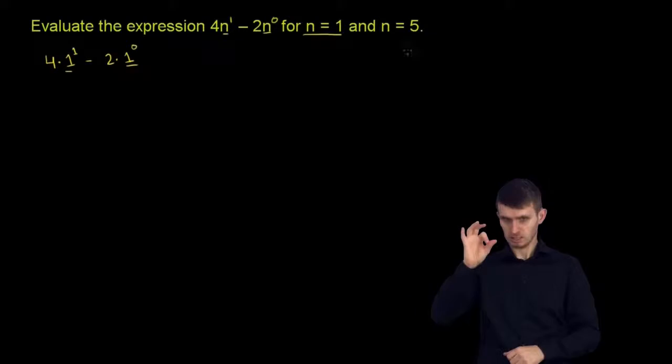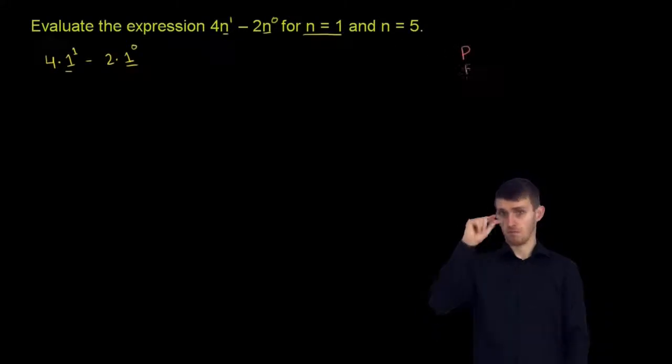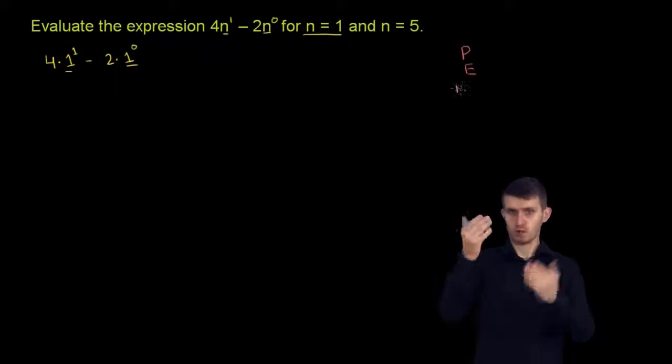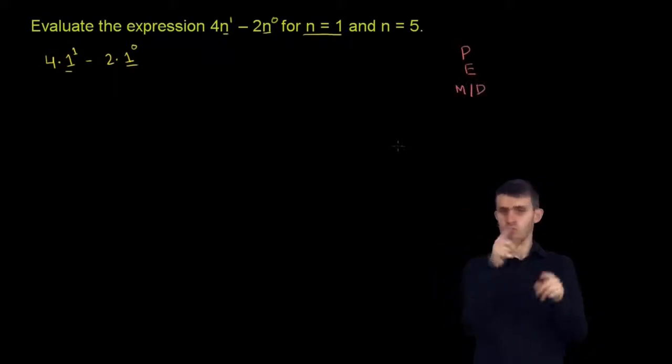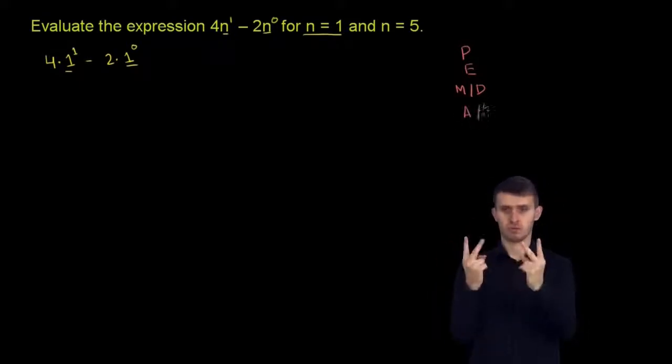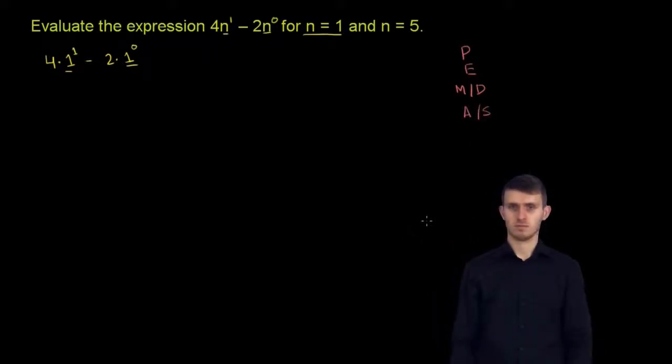So remember, we want to do our order of operations. We have PEMDAS—parentheses, then exponentiation, then multiplication and division are at the same level. They get the same priority. And then addition and subtraction get the same priority.